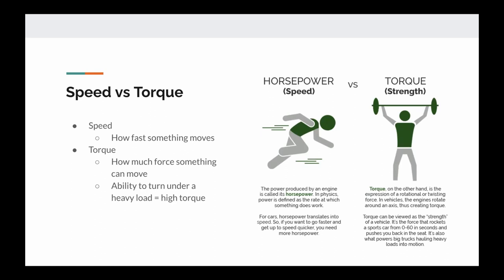On the other hand, torque is how much force something can move. So if you're trying to lift up a 10-pound dumbbell, you're using more torque than if you're trying to lift a 5-pound dumbbell. If you were to lift a 10-pound dumbbell twice as fast, then you would have twice the amount of speed.